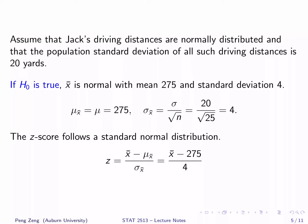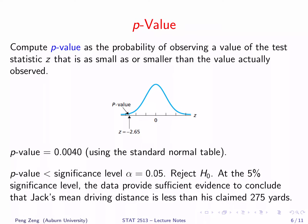We can calculate the z-score for x-bar, which is x-bar minus 275 divided by 4. Recall that the z-score indicates the relative standing of a value. We will evaluate how likely it is to observe this sample in terms of z-scores. In this case, we will reject H0 if it is unlikely to observe such a sample. The probability we want to compute is called a p-value. It is the probability of observing a value of the test statistic z that is as small as or smaller than the value actually observed.